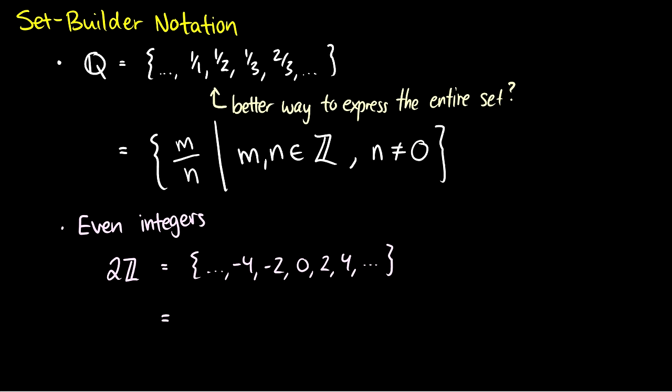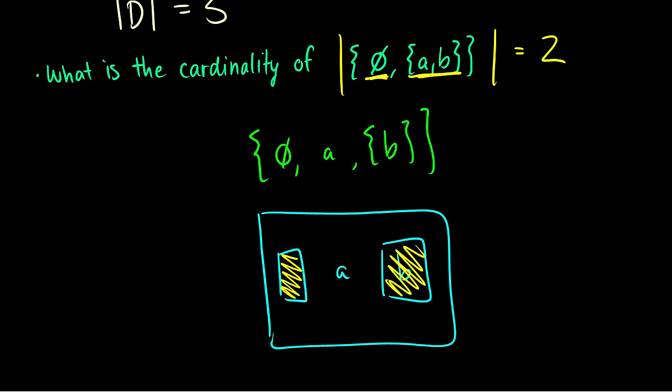How does this differ from a set containing the empty set, the set {A}, and the set {B}? Well, this is different. If we draw this out, we have a box containing nothing, a box with A in it, and another box with B in it — so we see three other boxes. The size of this set would be three. One more example: if we have the empty set, the element A, and the set {B}, once again there are three elements we can see: this box containing something, the element A, and another box containing B. So the cardinality is equal to three.